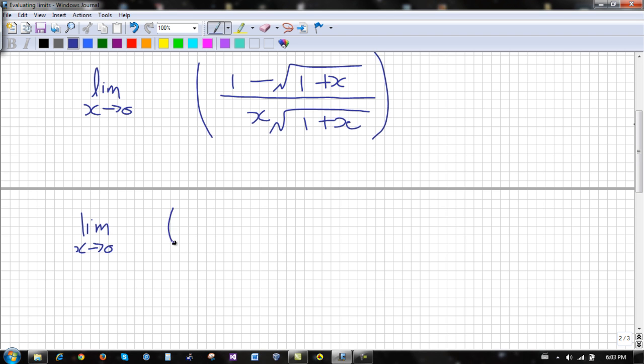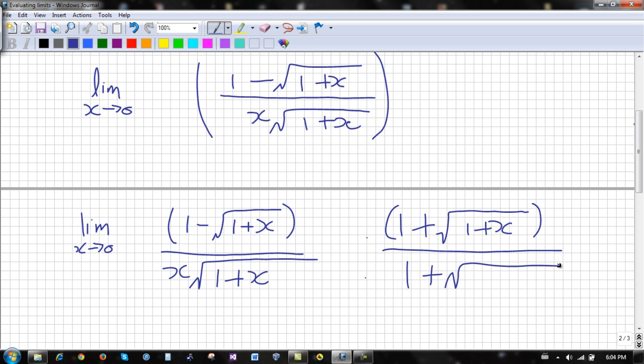1 minus root 1 plus x over x times root 1 plus x. Multiply by the conjugate. The conjugate is the numerator in this case. So we take 1 plus root 1 plus x over 1 plus root 1 plus x.